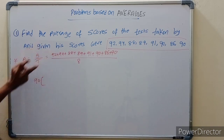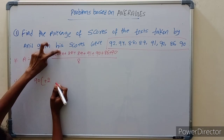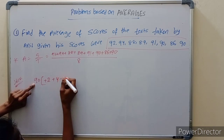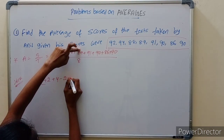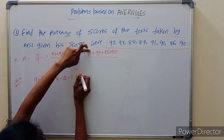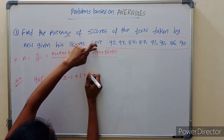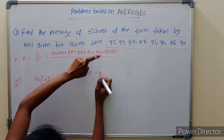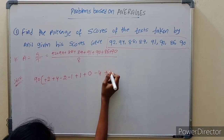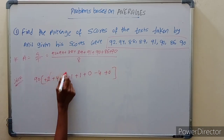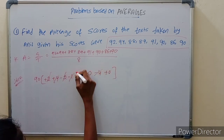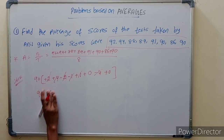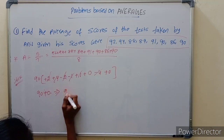Using the trick: assume the first number as 92. Then 92 at 92 is plus 0, 94 at 92 is plus 2, 88 at 92 is minus 2, 89 is minus 1, 91 is plus 1, 90 is 0, 86 at 92 is minus 4, 90 is 0. The deviations are plus 2, minus 2, plus 4, minus 4, plus 1, minus 1, so they cancel out to 0. Therefore 90 plus 0 means the average is 90.